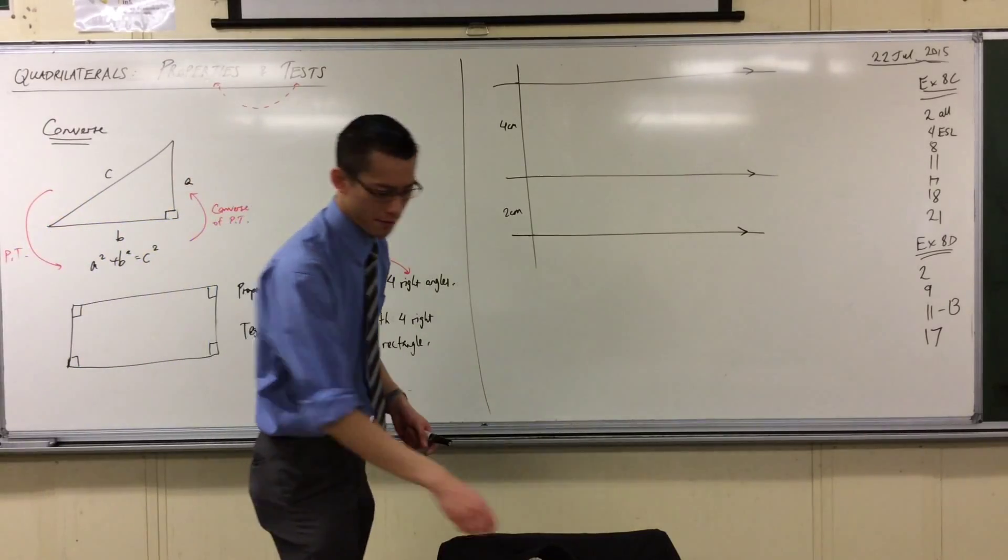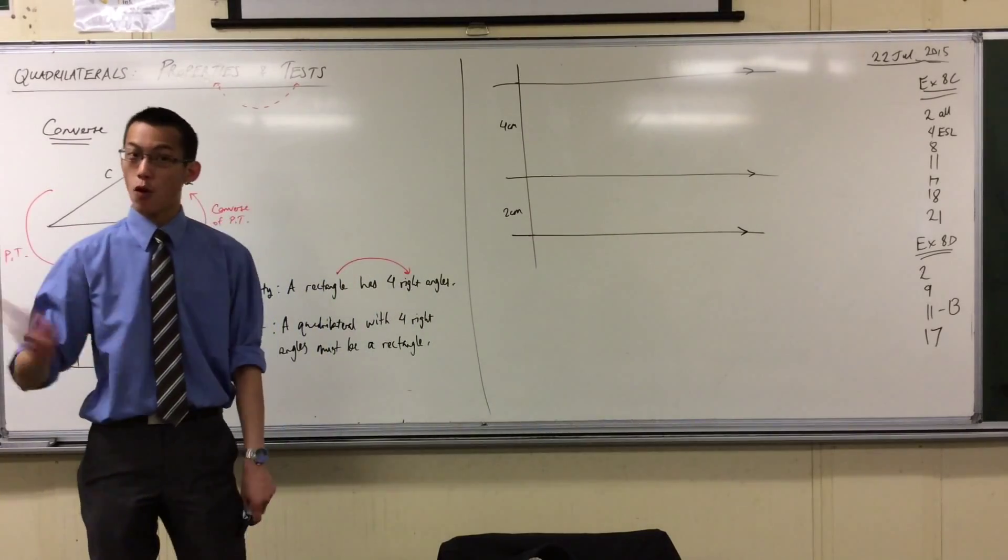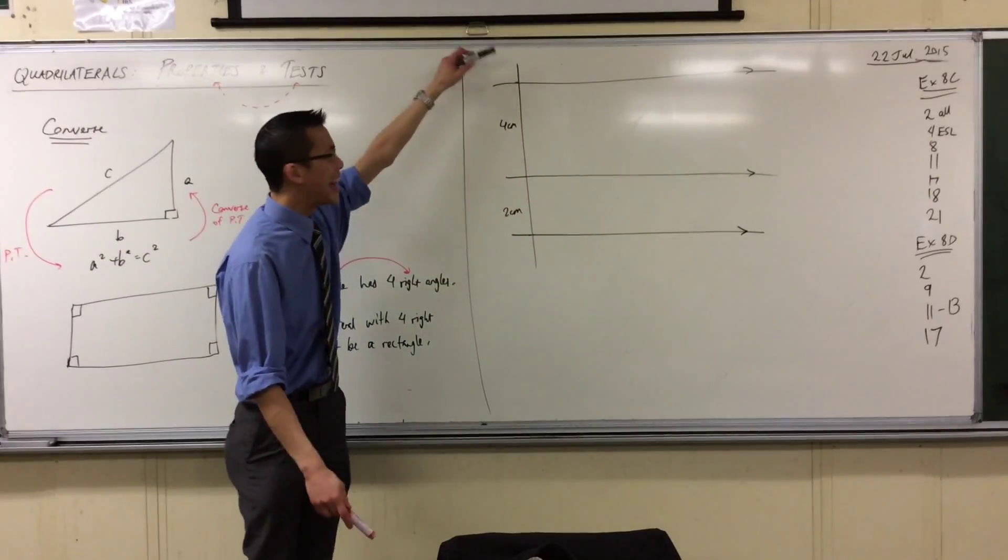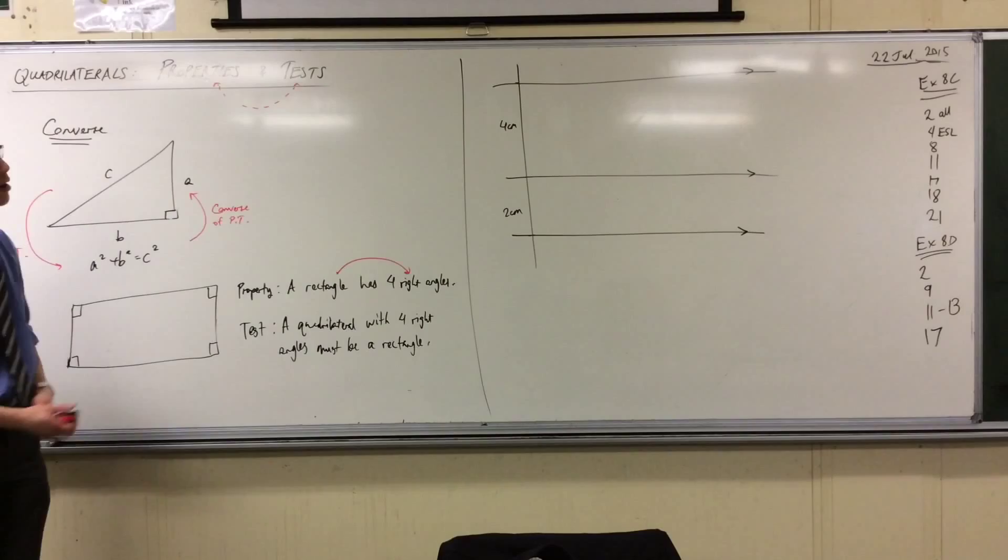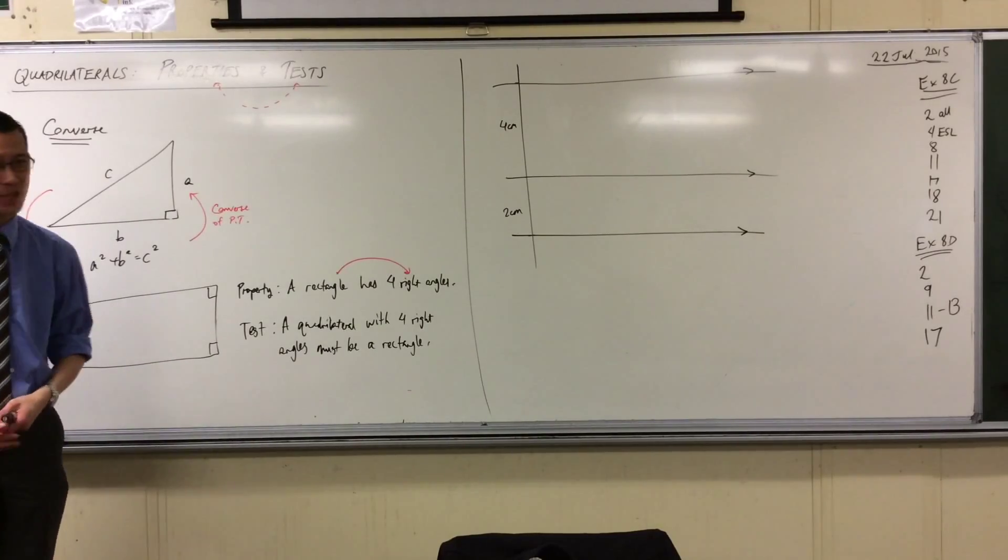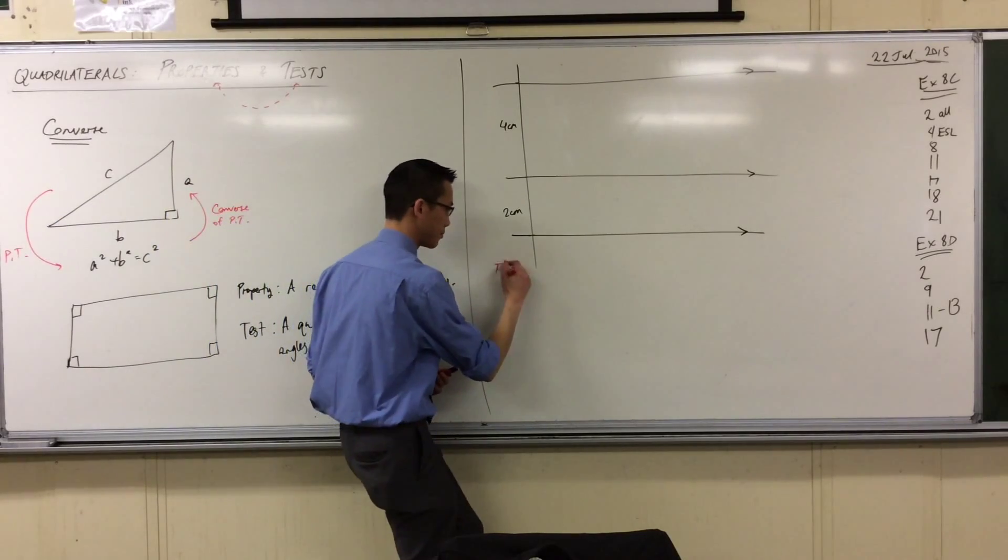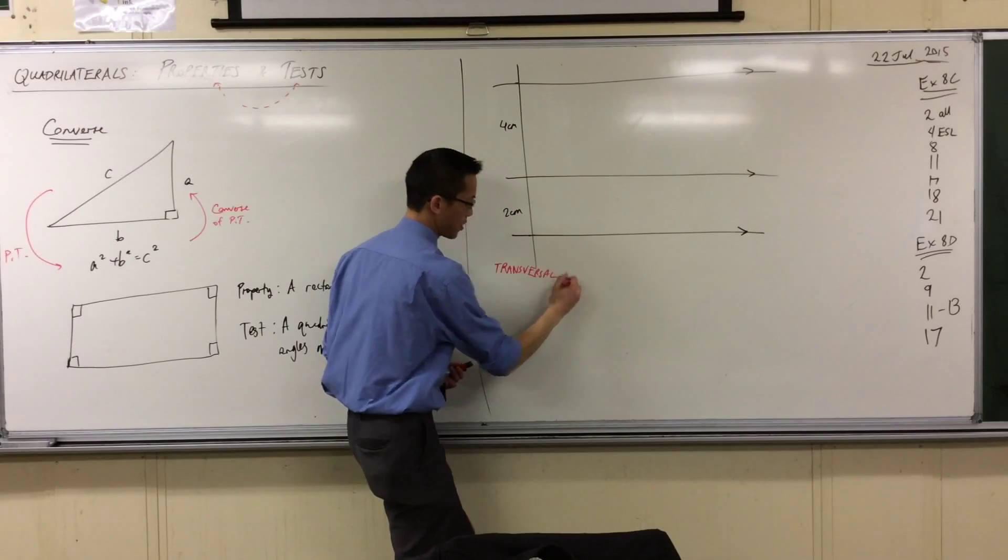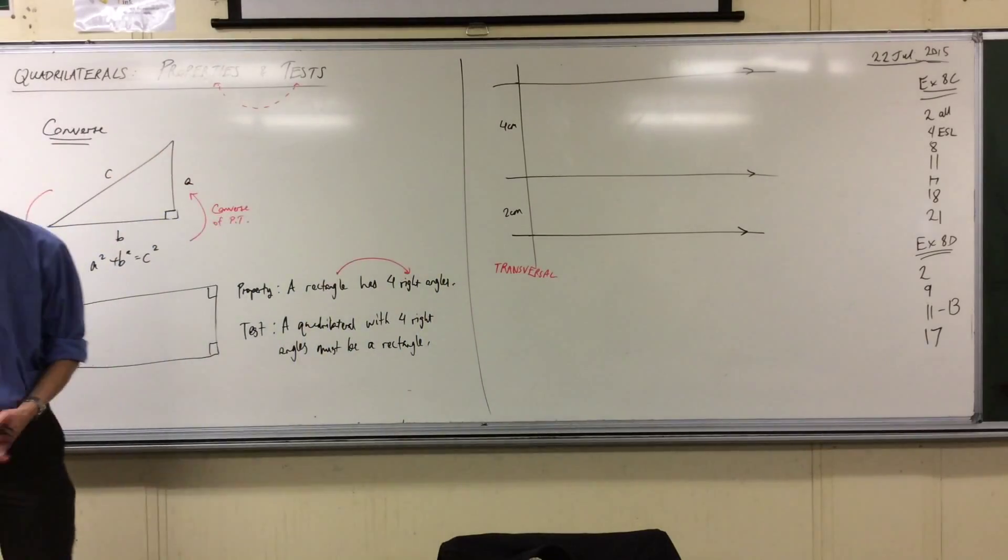Before I add anything else to this, we have three parallel lines. That line you started with, the vertical one, cuts all of those parallel lines. It goes across them. So it has a special name. Starts with a T. Anyone know? Transversal. Right, because literally going across, that's what transversal means, your parallel lines.